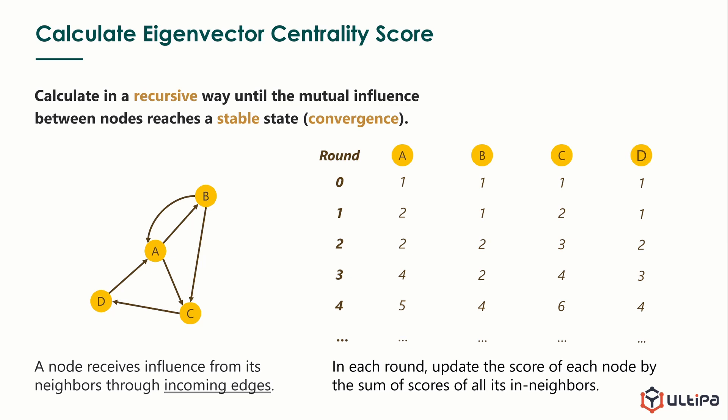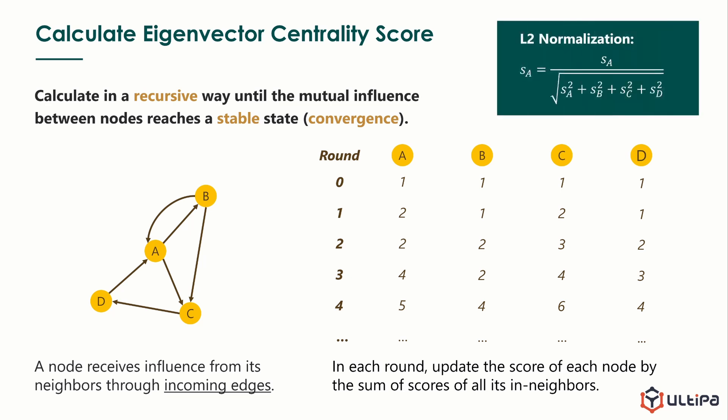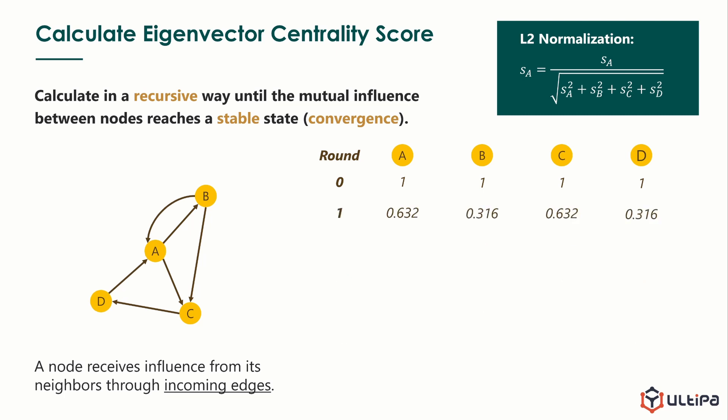We see the scale of these scores gets bigger in each round. However, it's hard to determine when the stable state is met. Stable means that the relative size of all scores doesn't change. For this purpose, we apply L2 normalization to all scores after each round. So after the first round, the scores of the 4 nodes are like this. And after we run about 20 rounds, the scores don't change anymore.